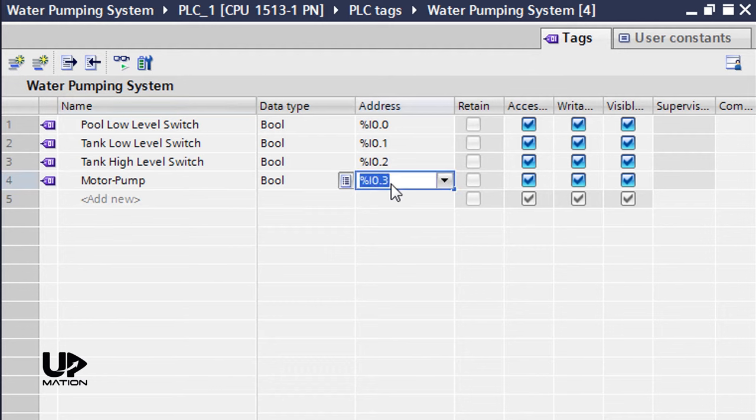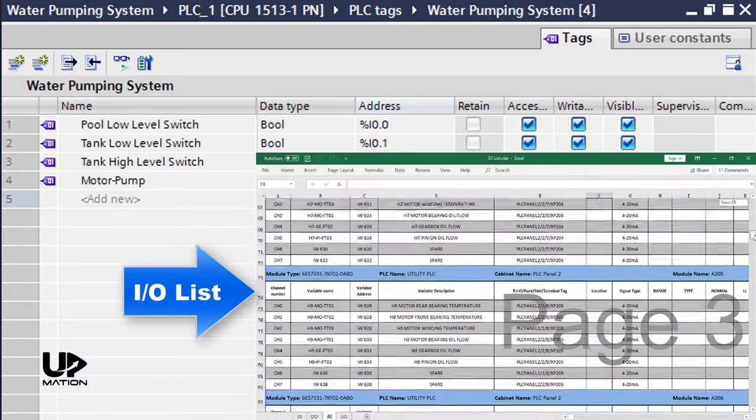I assign the address of Q0.0 to that. By defining these tags in the tag table, we will prevent confusion when we are writing the PLC program or during the maintenance and troubleshooting. Particularly when our process includes thousands of inputs and outputs.